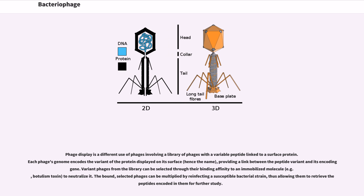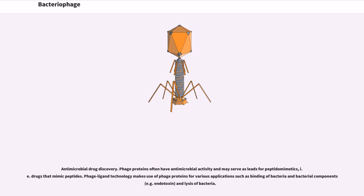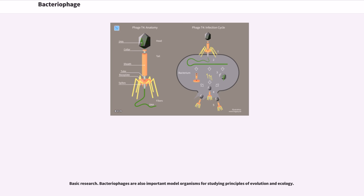In antimicrobial drug discovery, phage proteins often have antimicrobial activity and may serve as leads for peptidomimetics — drugs that mimic peptides. Phage ligand technology makes use of phage proteins for various applications such as binding of bacteria and bacterial components like endotoxin, and lysis of bacteria.